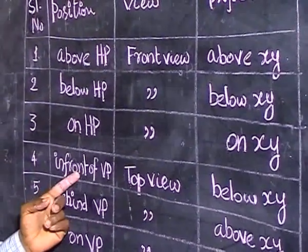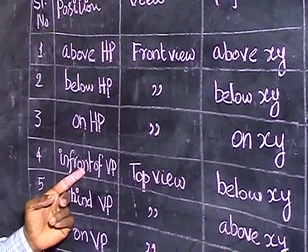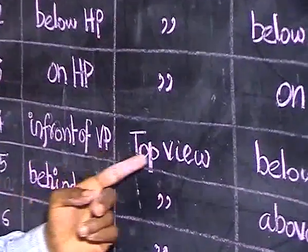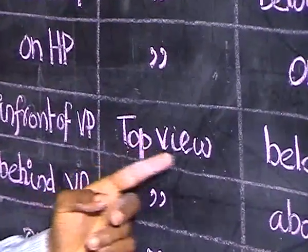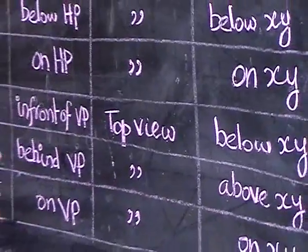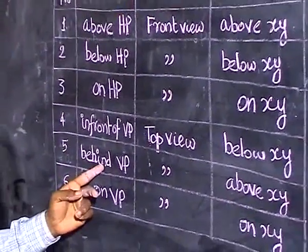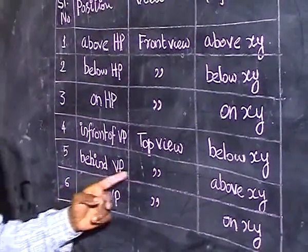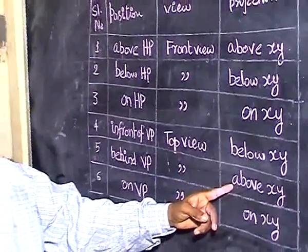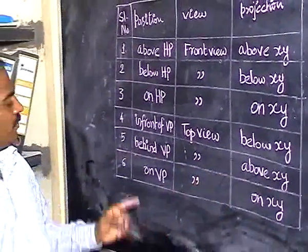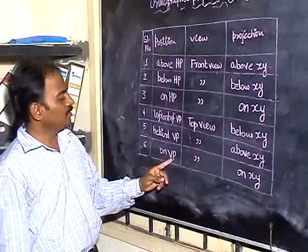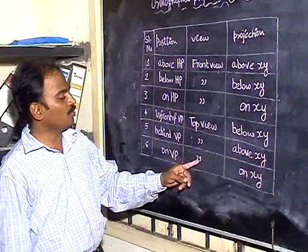Fourth case: the point is in front of VP. Position is in front of VP, it relates to top view, and the answer should be below X-Y. Fifth case: position is behind VP, it relates to top view, and the answer should be drawn above the X-Y line. Last case: on VP — it relates to top view.